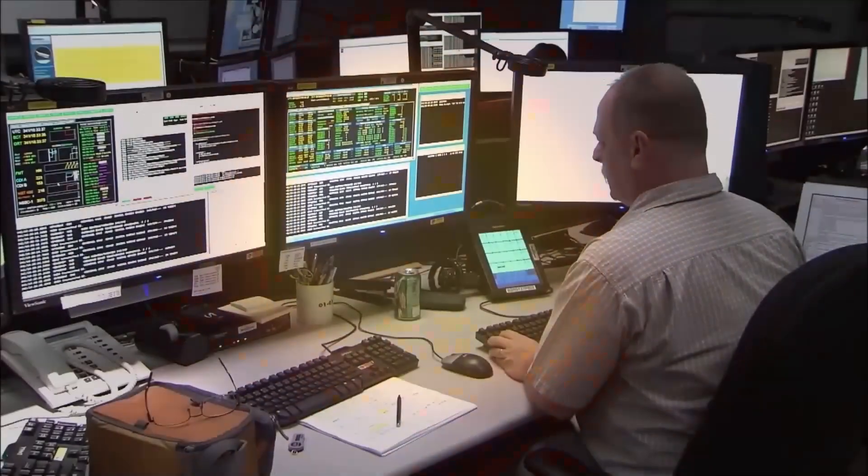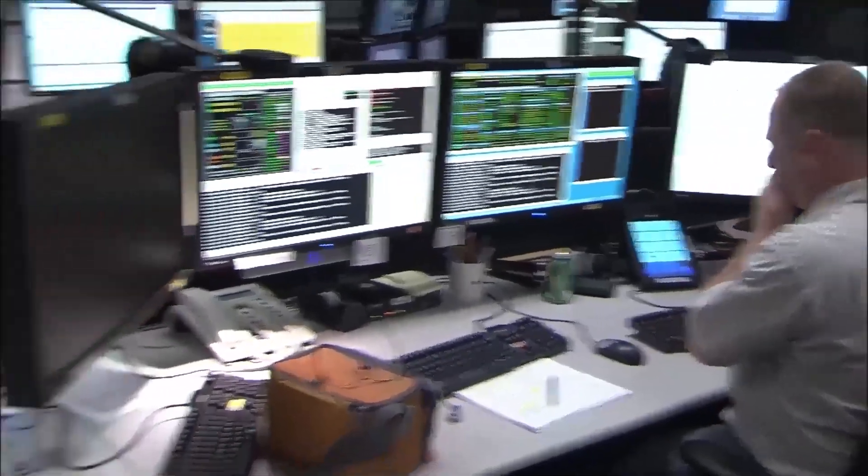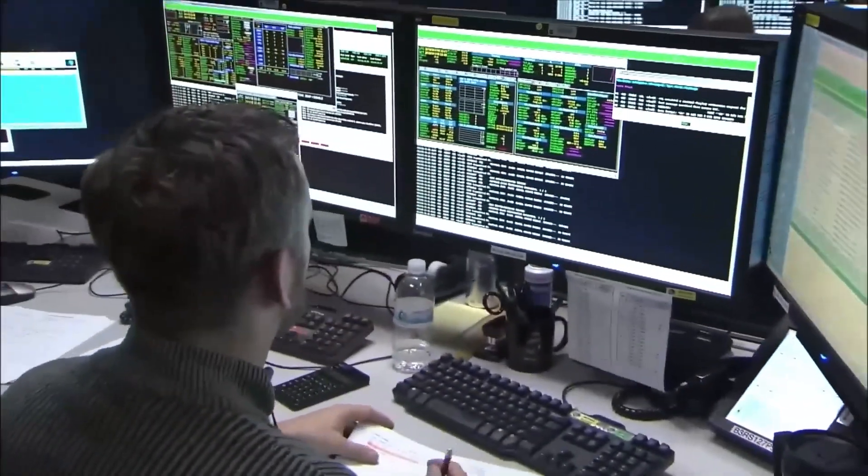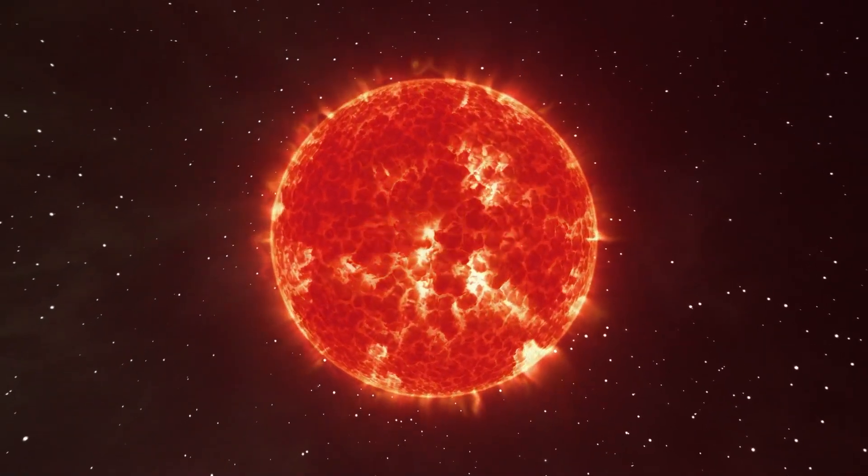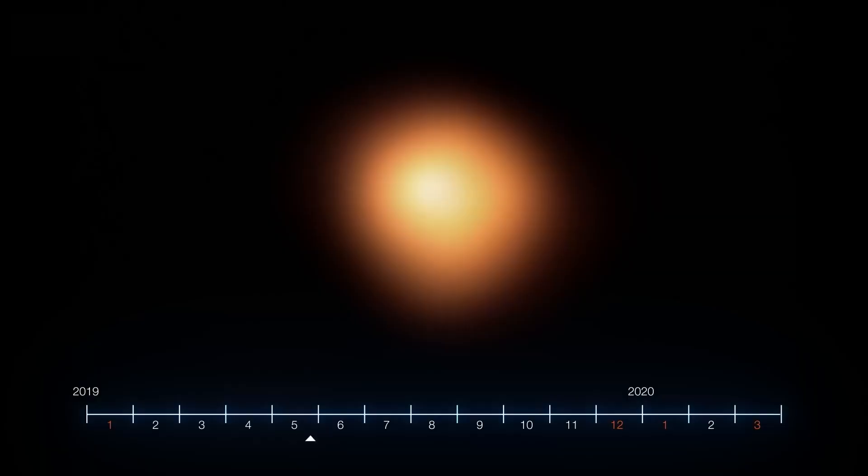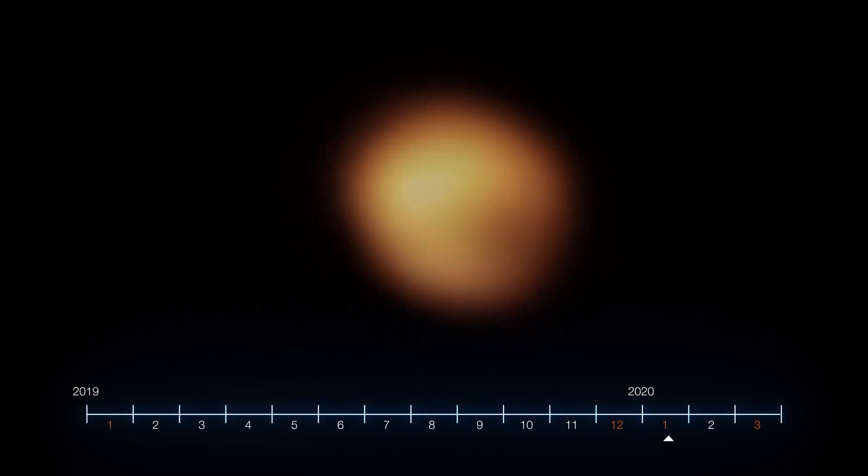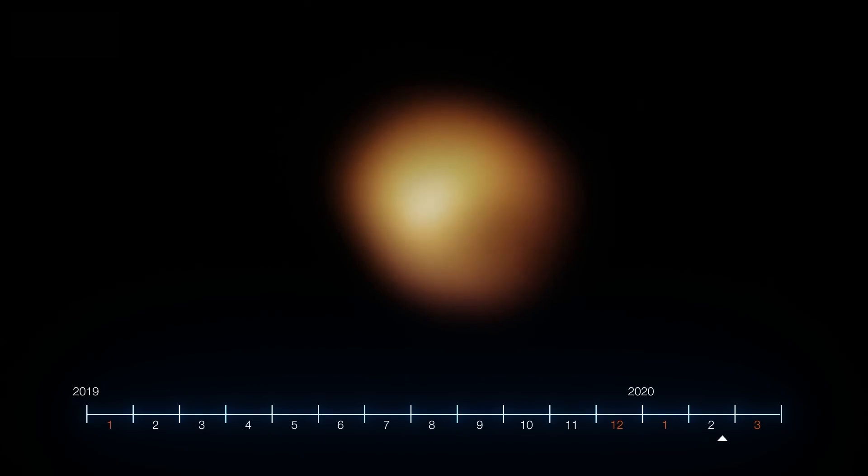For several months, the star's brilliance faded, and observers worried if Betelgeuse had reached the end of its life. Despite the fact that the red giant star's brightness returned to normal after a few months, astronomers were surprised to find evidence of the enormous dimming when they focused some of the most powerful telescopes on it.